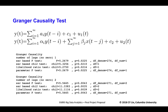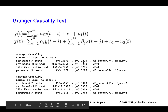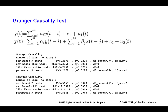We conducted a Granger causality test to learn whether one time series can predict another time series. In our case, we wanted to know whether sentiment score can predict stock price. We can say sentiment score is a Granger cause if the past value of sentiment score can predict the future value of stock price. Our null hypothesis is that sentiment score is not useful. From the outputs, we found significance at lag one, so we reject the null hypothesis.